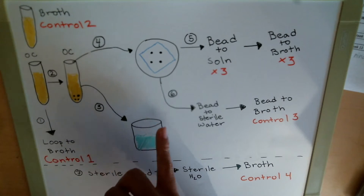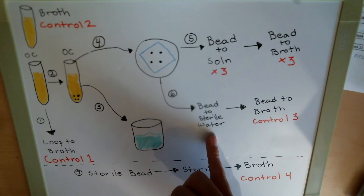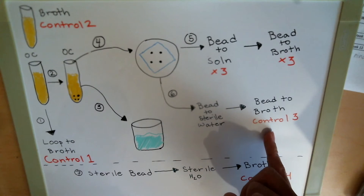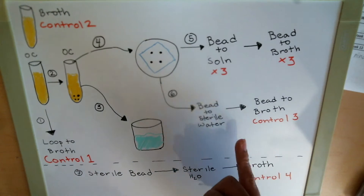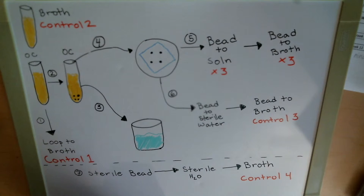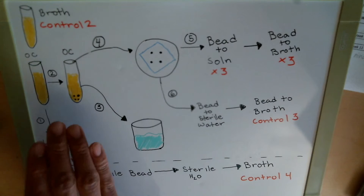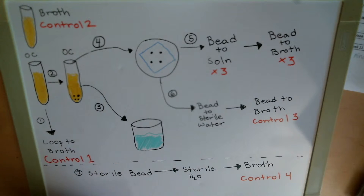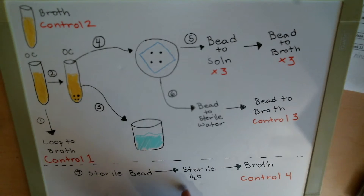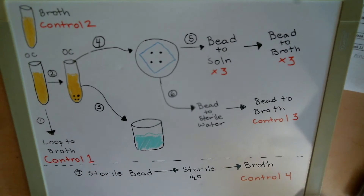You'll also have the fourth bead — take that and put it into sterile water, then transfer it into a broth of its own and label that Control 3. You'll be working as a whole class, and each lab bench will have their own disinfectant. The other half of the class can take a sterile bead, place it into sterile water, put it into a nutrient broth, and label that Control 4.